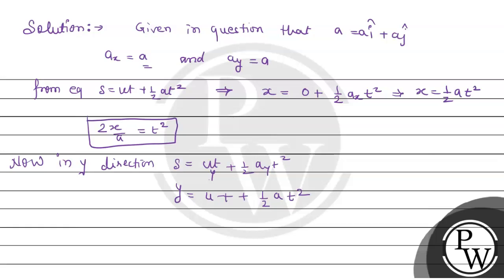Now the value coming is ut plus half a t square. We have to solve this. This will be equation number 2, and what we considered for x, that is x equals half a t square, this is our equation number 1.